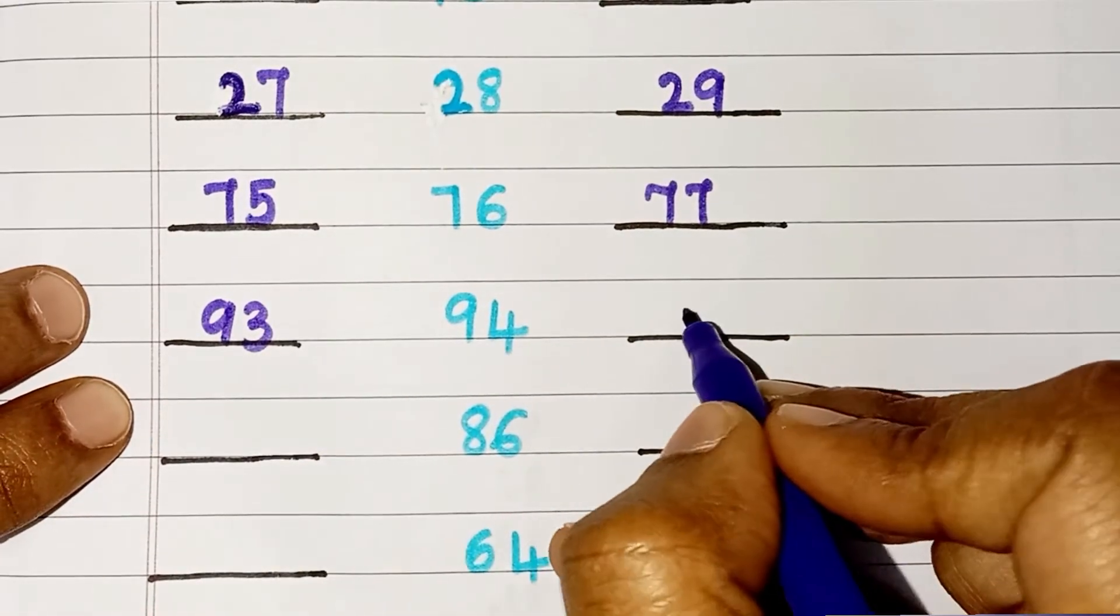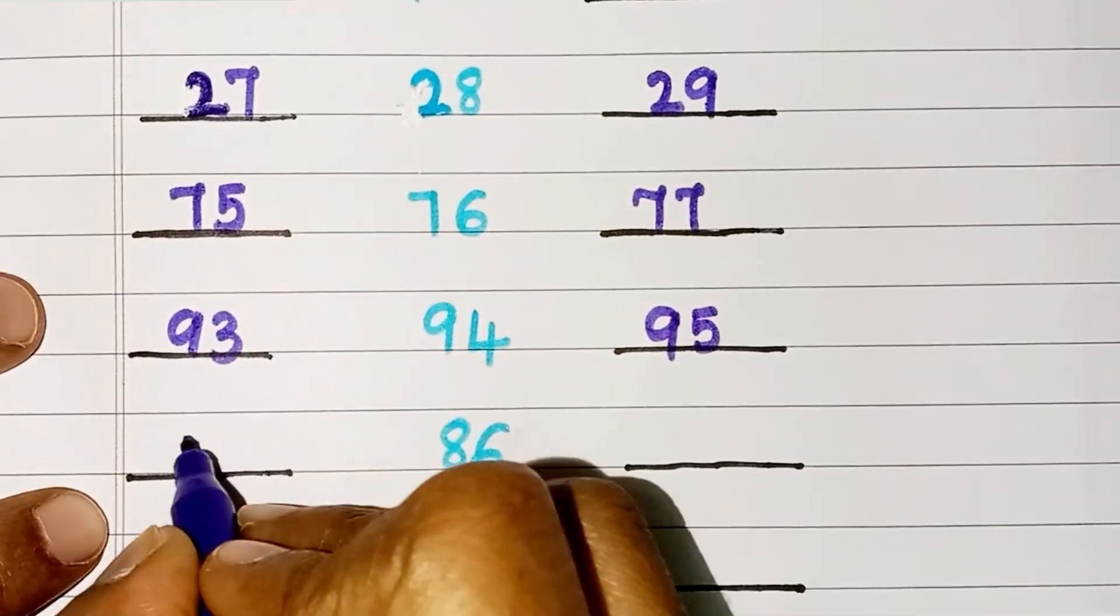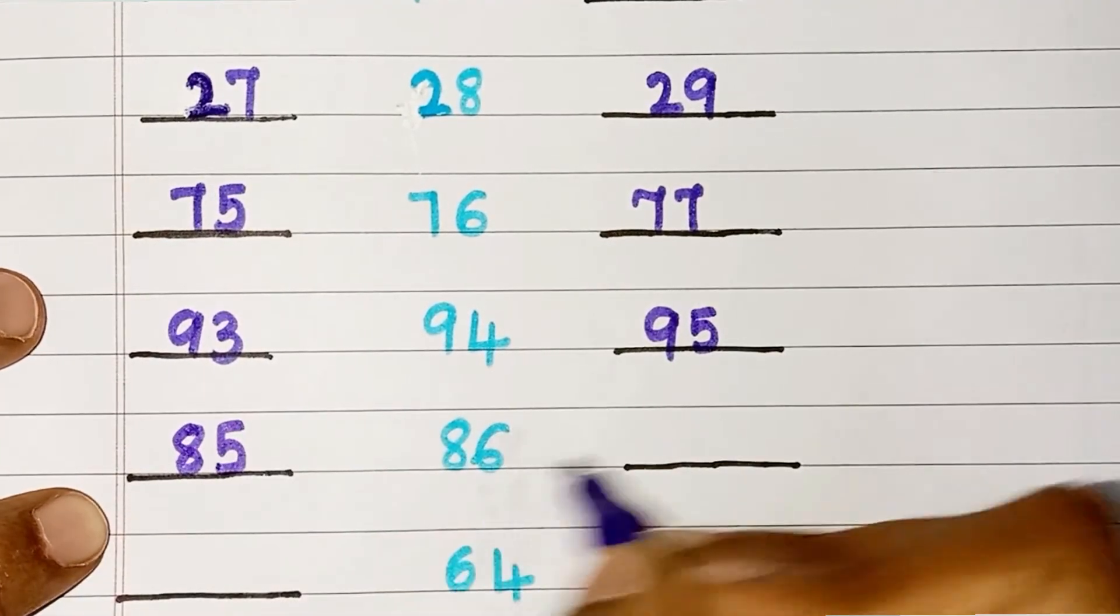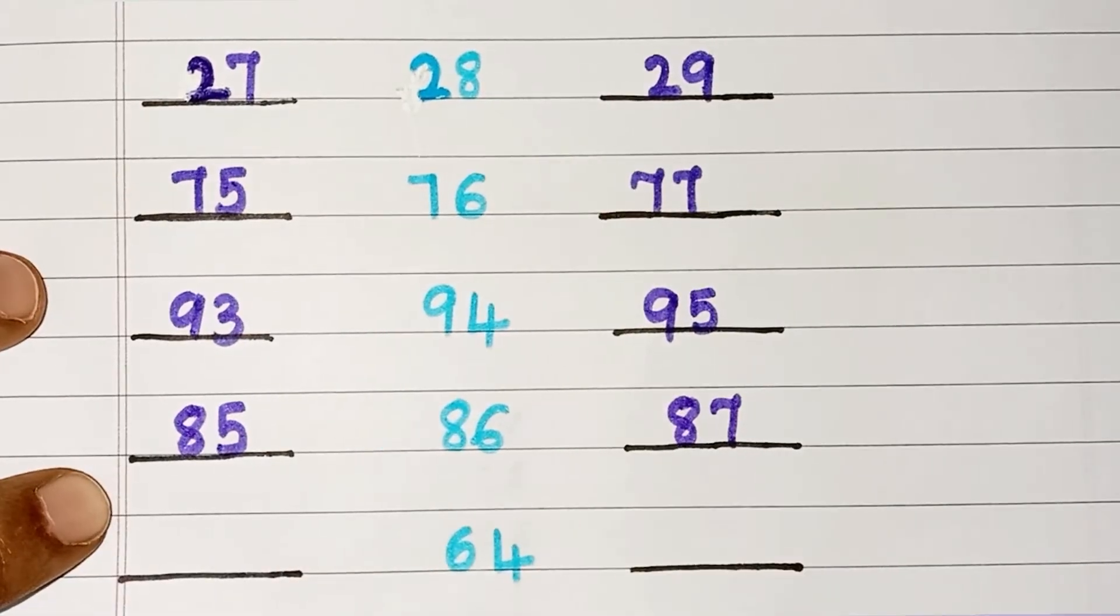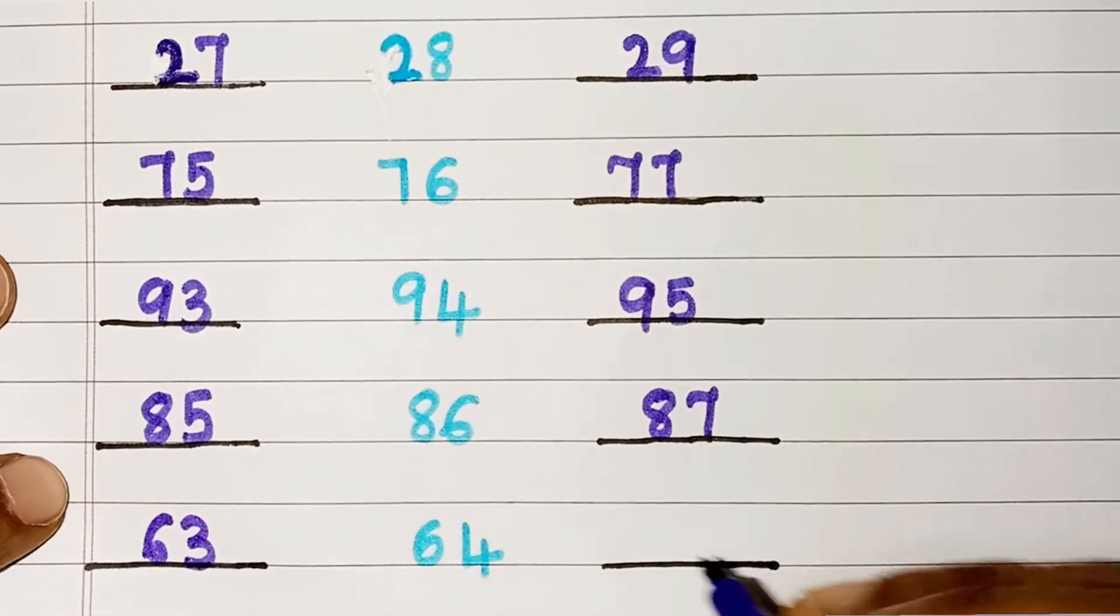Before 94, 93. After 94, 95. Before 86, 85. After 86, 87. Before 64, 63. After 64, 65.